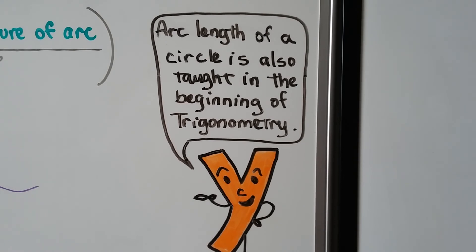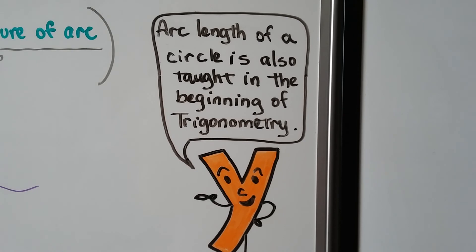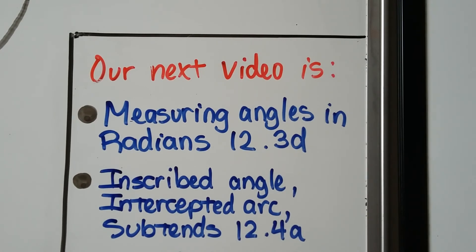Arc length of a circle is also taught in the beginning of trigonometry — in my book it's chapter 3, right up front. So if you were able to understand this and you're in high school geometry, you can know that trigonometry is not going to be that big of a deal. If you could follow this lesson, you'll be okay in trig. For the fourth and last part of this lesson, 12.3, we're going to go to 12.3D and talk about measuring angles in radians. Then we'll go on to 12.4A and talk about inscribed angle, intercepted arc, and subtends.